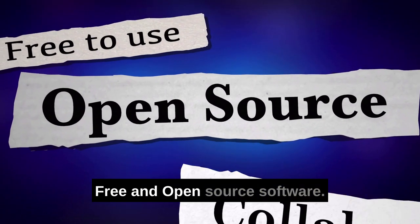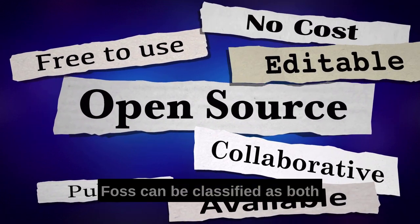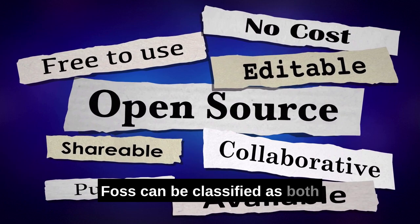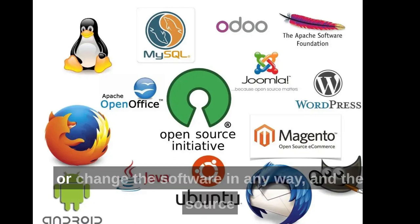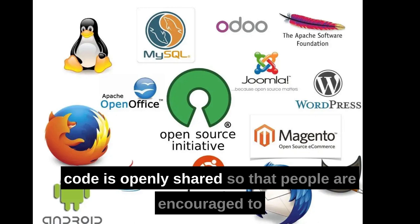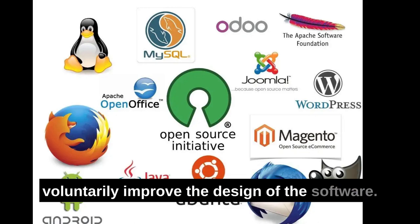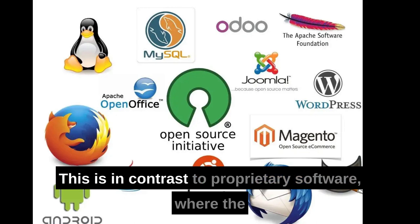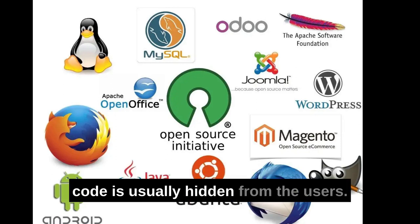Free and open source software. Free and open source software, FOSS, can be classified as both free and open source software. That is, anyone is freely licensed to use, copy, study, or change the software in any way, and the source code is openly shared so that people are encouraged to voluntarily improve the design of the software. This is in contrast to proprietary software, where the software is under restrictive copyright licensing and the source code is usually hidden from the users.